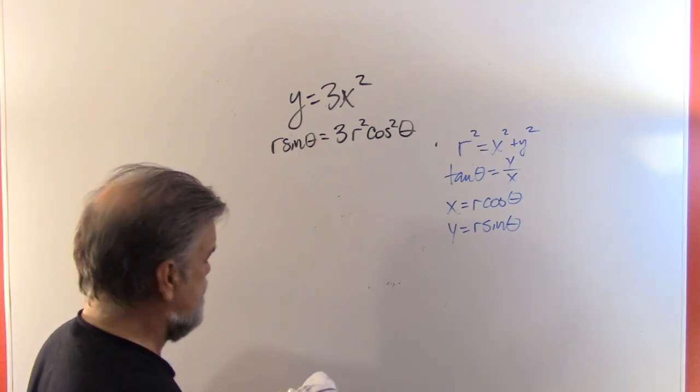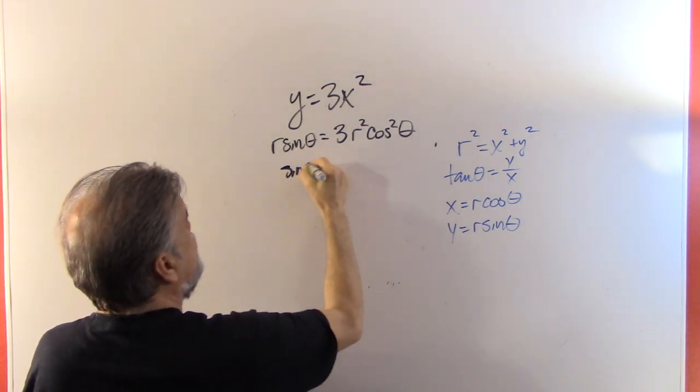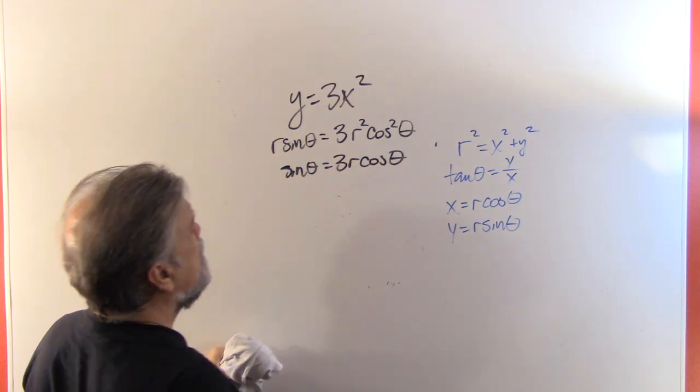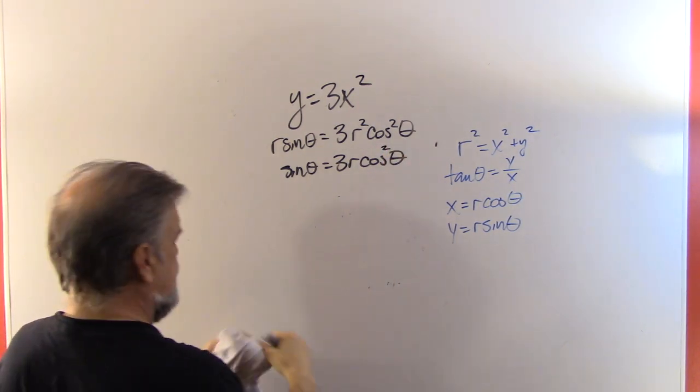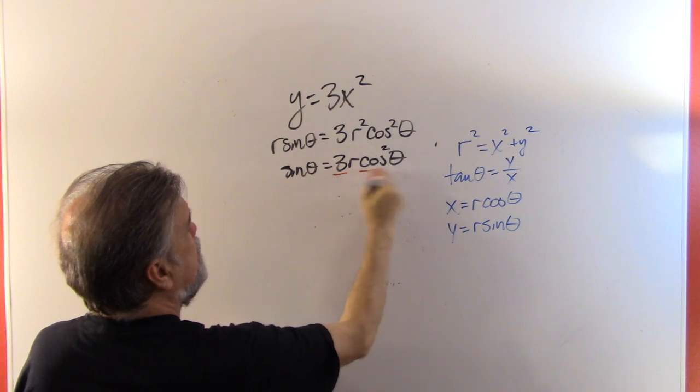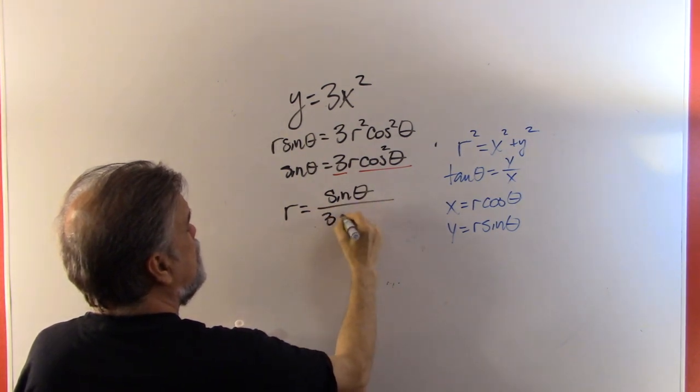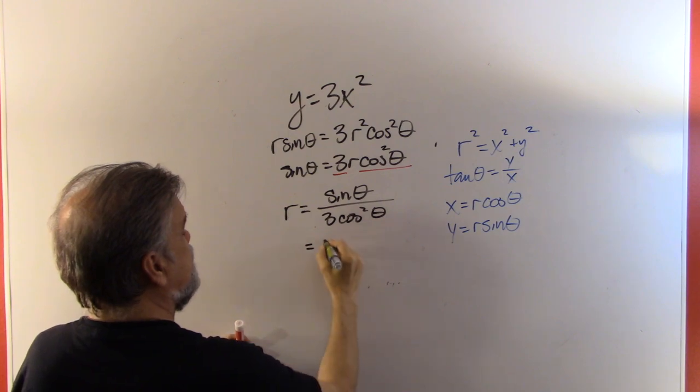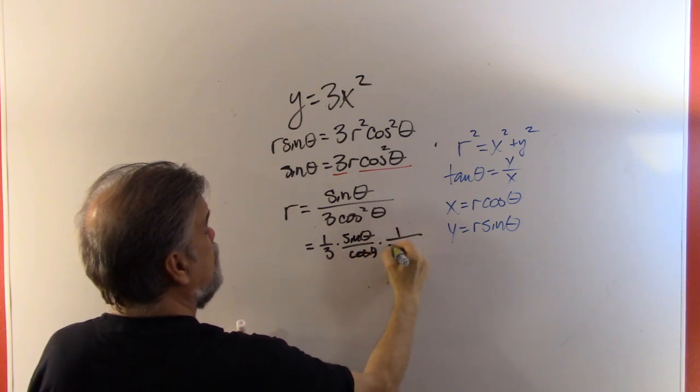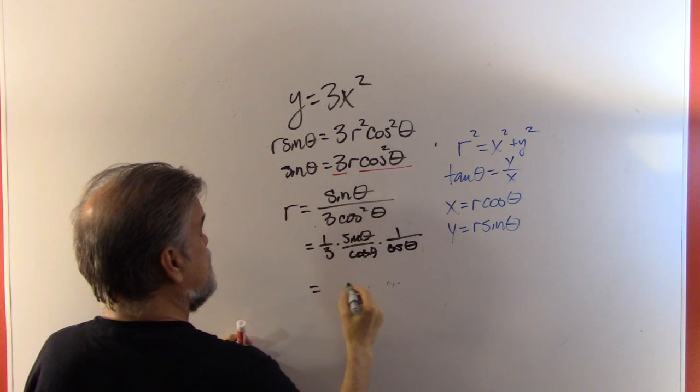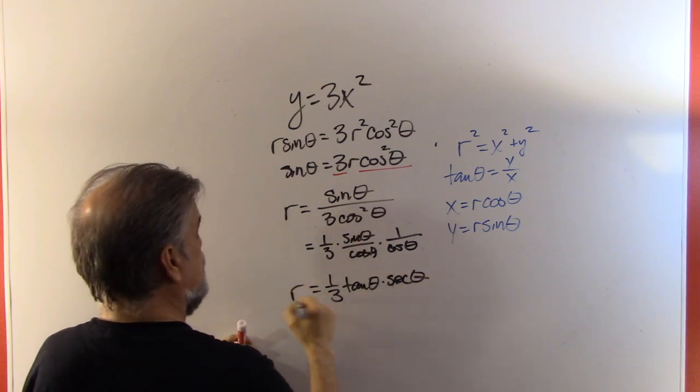And again, let's just do our substitutions. So that means r sine theta equals three r squared cosine squared of theta. And how about we divide both sides by r and that'll get us the sine of theta equals three r times cosine squared of theta. And if I divide everything by three and cosine squared of theta, that means I'm going to get r equals the sine of theta over three cosine squared of theta. And let me think of that this way. One third times sine of theta over cosine of theta times one over cosine of theta. And that gets me one third times the tangent of theta times the secant of theta. That's what r is.